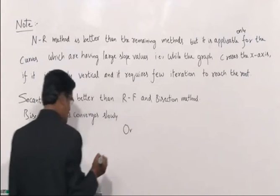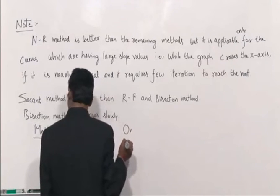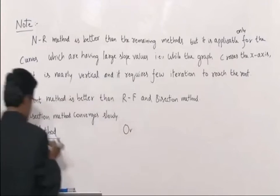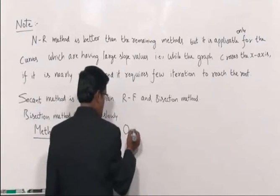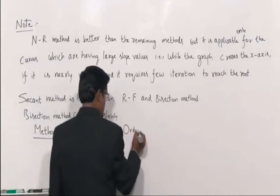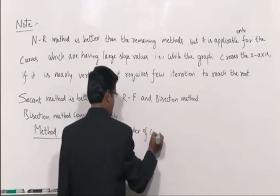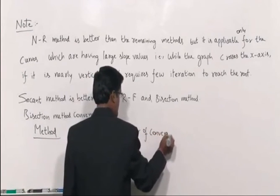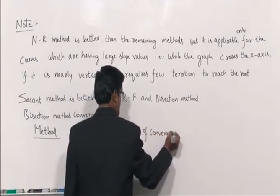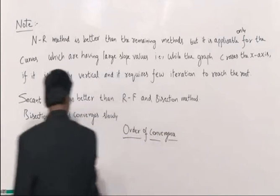Just divide your page into two columns — two parts. The first part is the method and the second part is the order of convergence. This is very, very important. I am giving one more question.